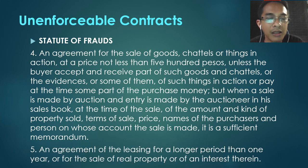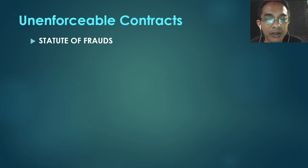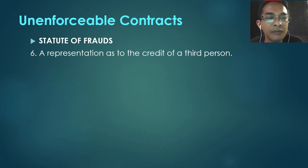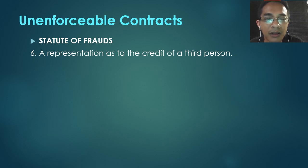Number five, an agreement for leasing for a period longer than one year — if you rent for more than a year, it must be in writing. Number six, a representation as to the credit of a third person — like a guaranty.